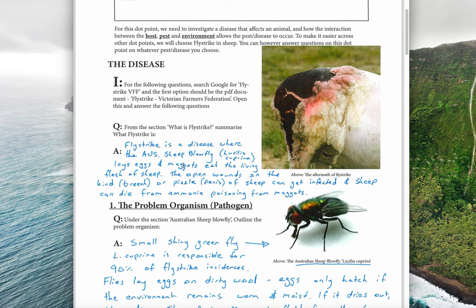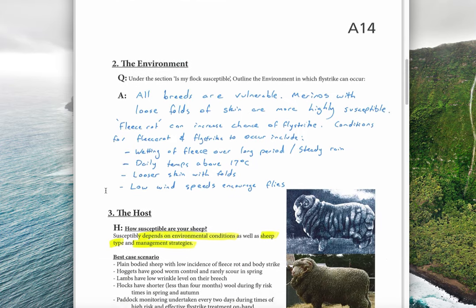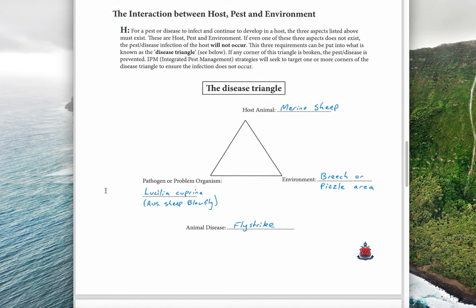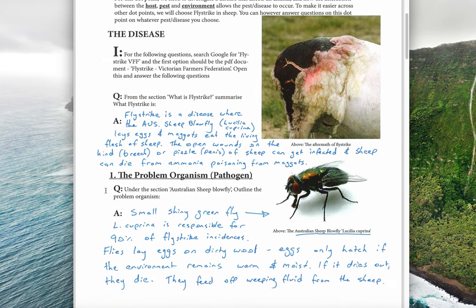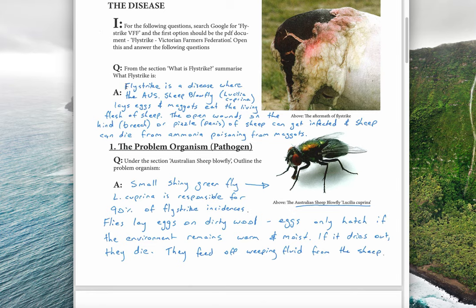First we'll look quickly at the disease, then we'll look at the problem organism, the environment, and the host before we put it all together in the disease triangle. Fly strike is a disease where the Australian sheep blowfly, known as Lucilia cuprina, lays eggs and maggots eat the living flesh of the sheep. The open wounds on the hind, breech, or pizzle of the sheep can get infected, and sheep can die from ammonia poisoning from the maggots.